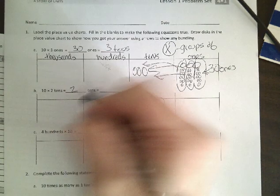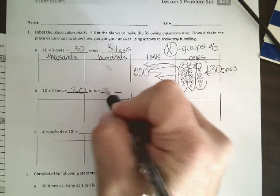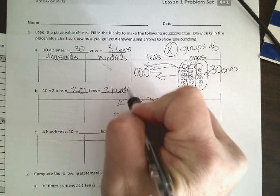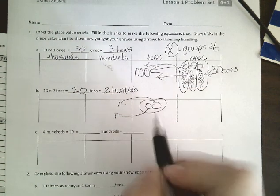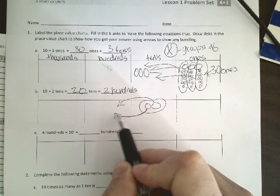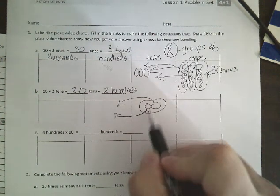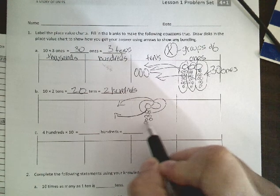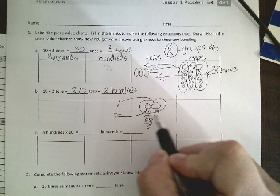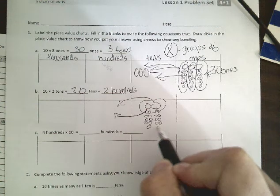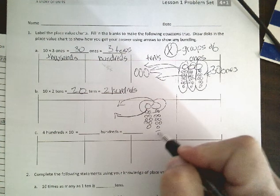And have 20 tens or 2 hundreds. A lot of students want to take this step and just move them over and it still looks like there's only 2 tens, but actually if we multiply each one of these out by 10, then we will see that we actually have 20. We have 10 in this one and 10 in this one.